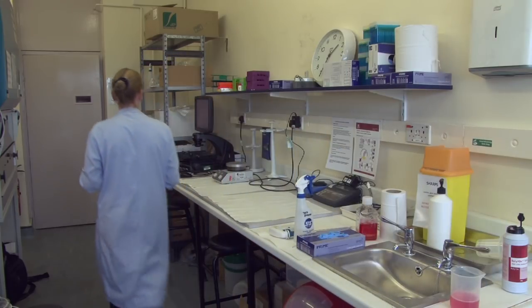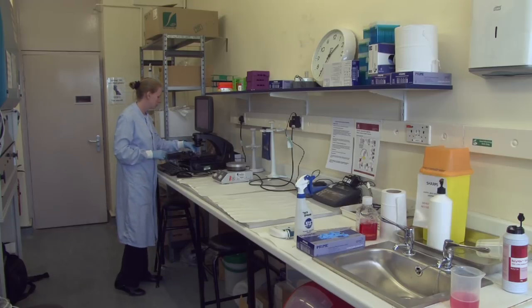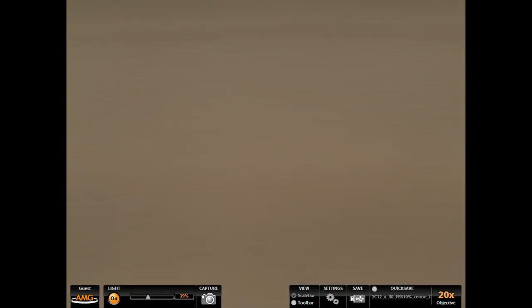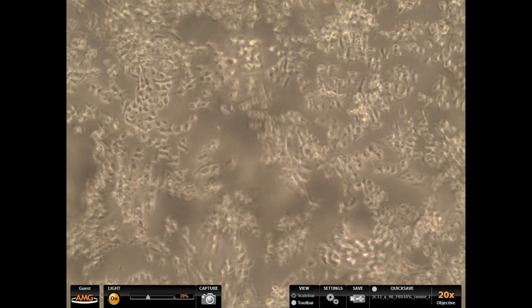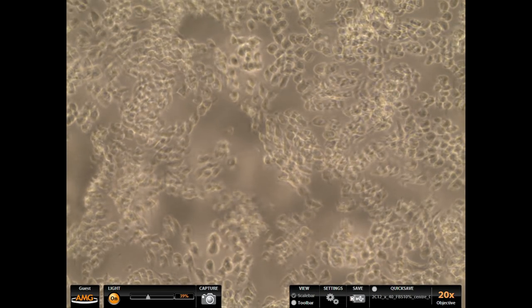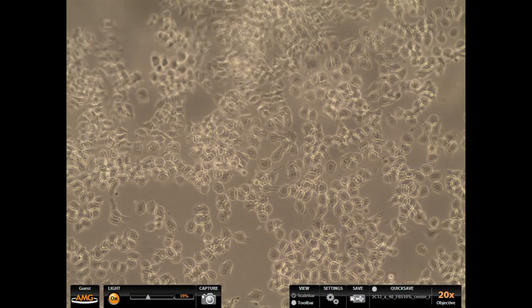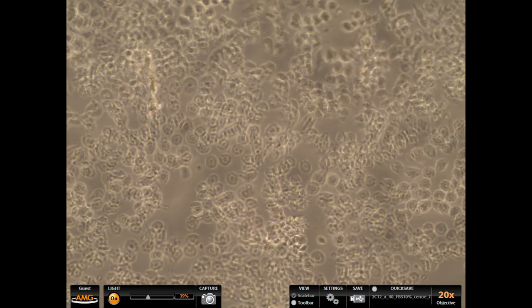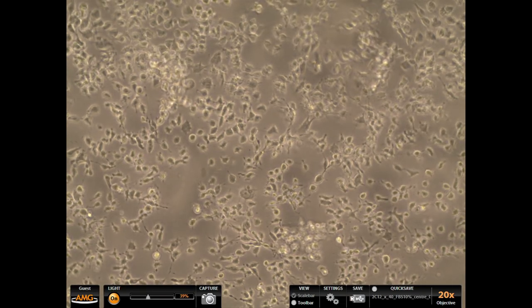After incubation, visually inspect the flask on the microscope. The cells should be beginning to detach. Ideally they should appear spherical, but still be attached to the plastic. If they're all floating free, they've been trypsinized too much.